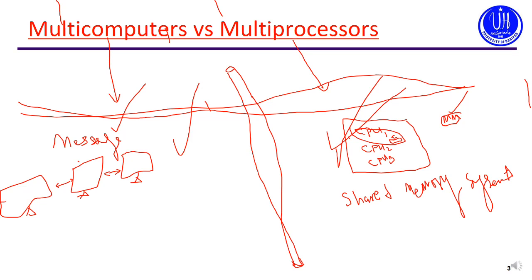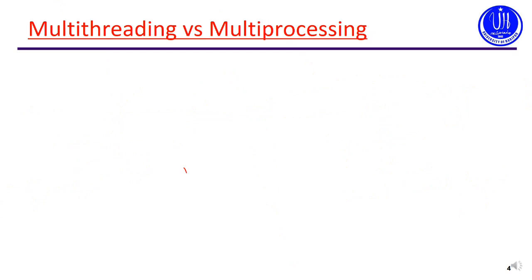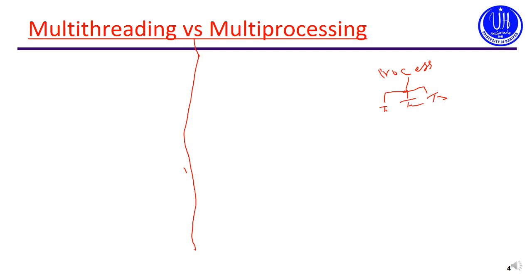The next topic is multi-threading versus multi-processing. A process is any program under execution. One process can have more than one thread — t1, t2, t3, and so on. Multi-processing means the execution of more than one process — multiple processes at the same time.